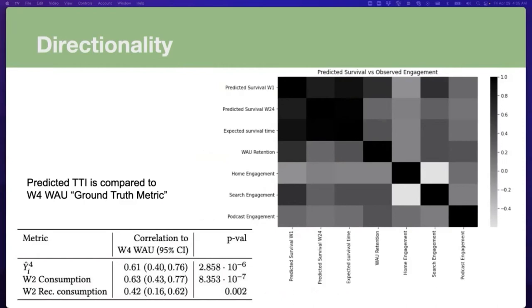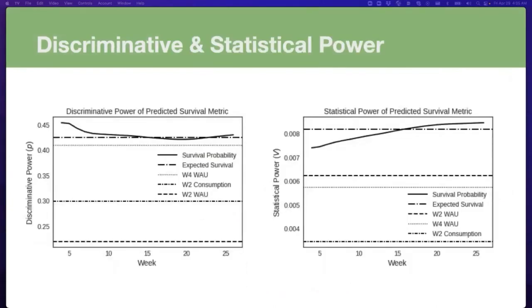Now that we've established directional alignment, let's look at the sensitivity of the metric. The baseline is week 2 retention. We compare the predicted time-to-inactive with week 2 retention (dashed lines) and the observed week 4 retention (dashed lines with tiny dots). The expected survival at the top — the time-to-event metric — has the highest sensitivity in terms of both discriminative power and statistical power. The survival probabilities, also from the time-to-event metric, show the probability at each week, hence the curved line.